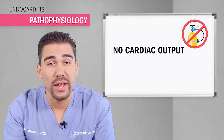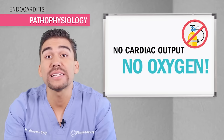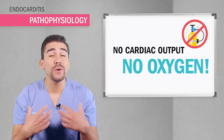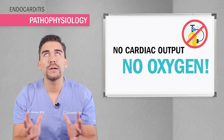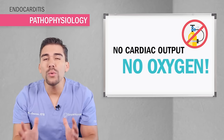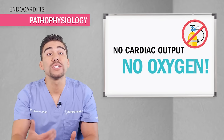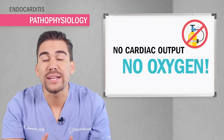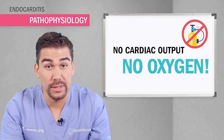This eventually leads to a less forceful contraction in the heart, meaning less oxygen-rich blood being pumped out to the body — less cardiac output means less oxygen to the body. Before you try to memorize all those signs and symptoms, always recall the pathophysiology first. It makes everything a whole lot simpler.